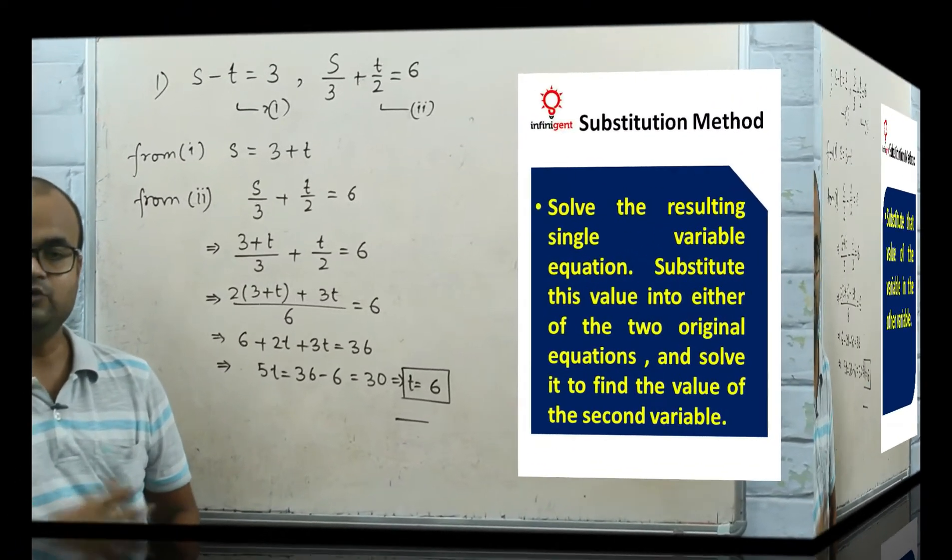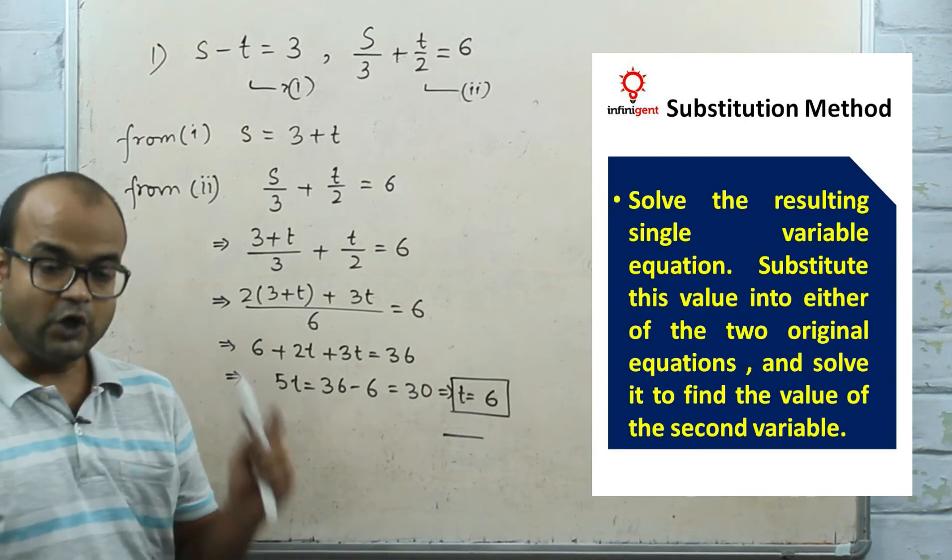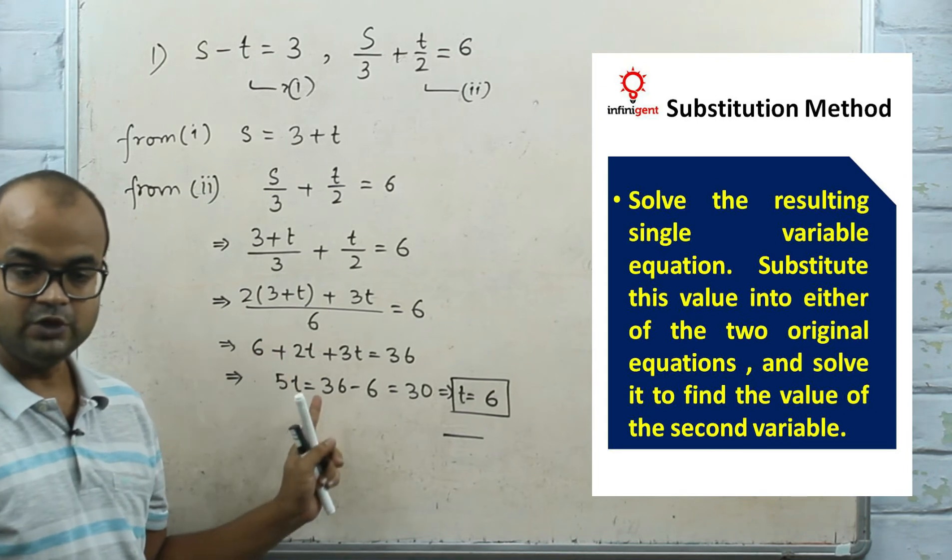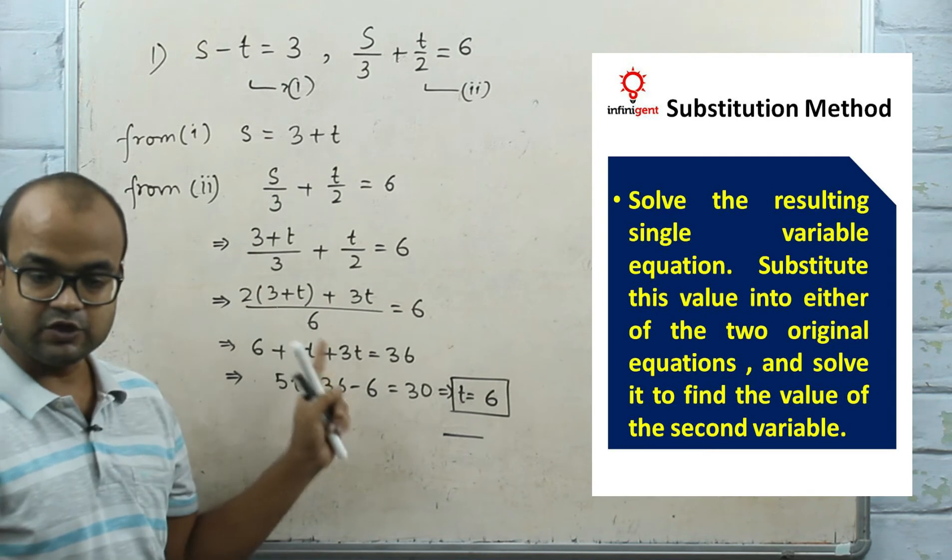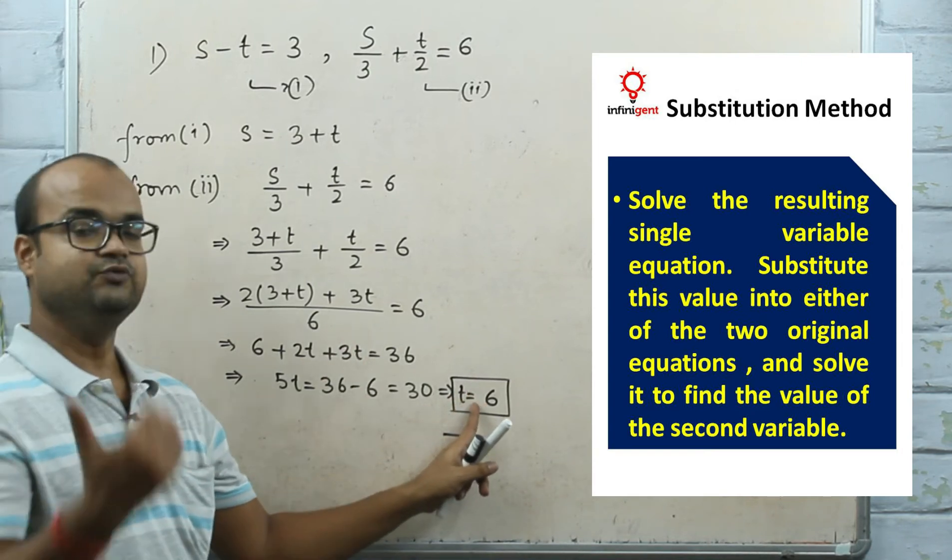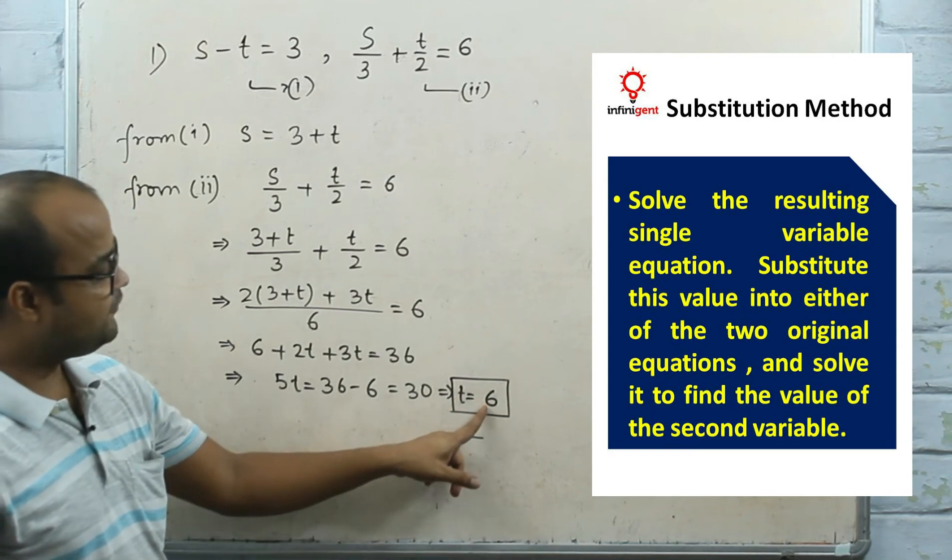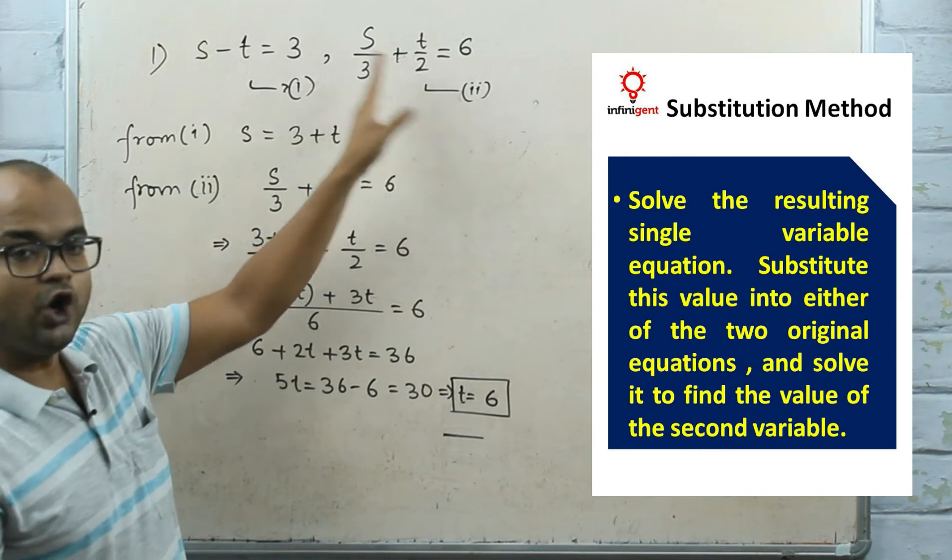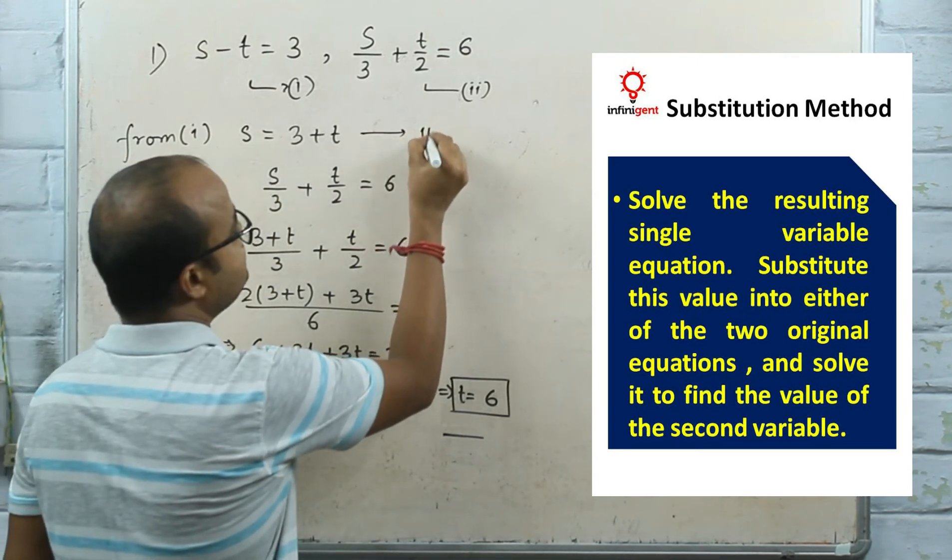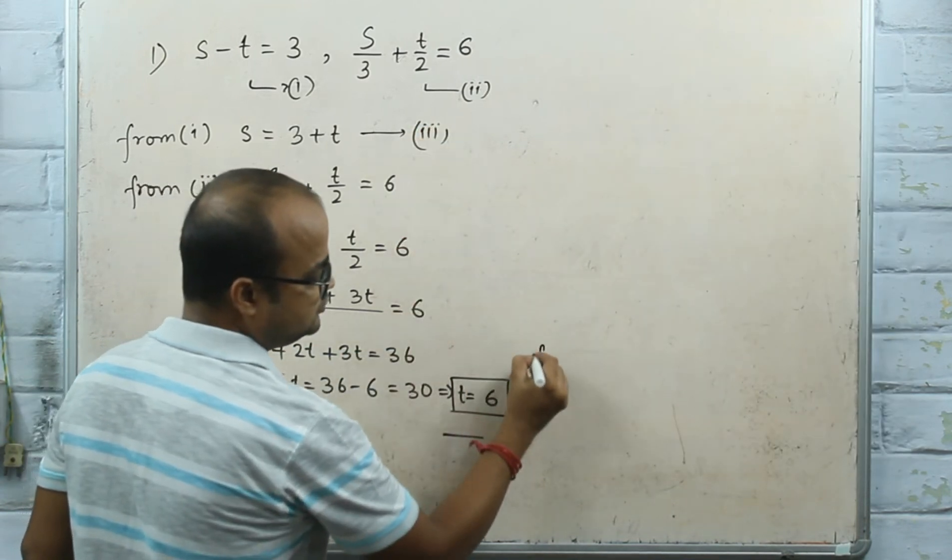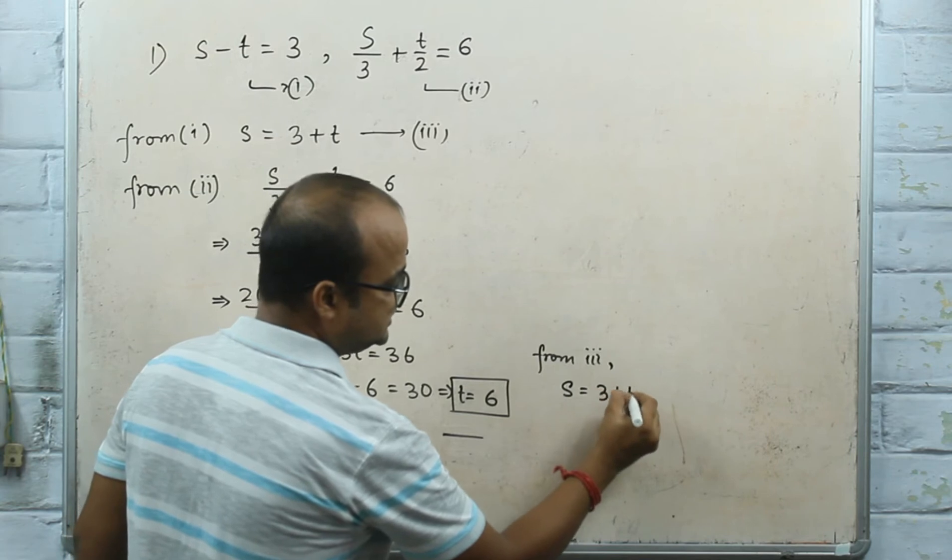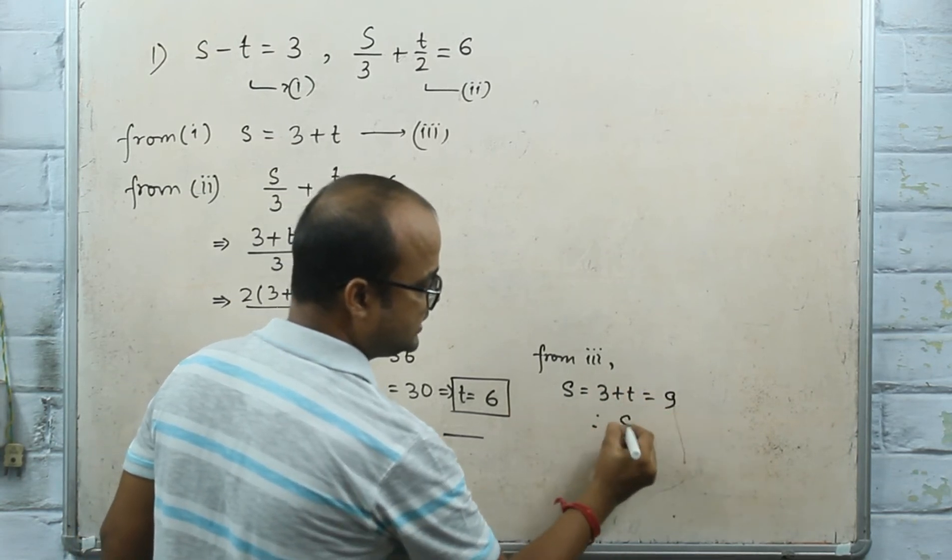Now solve the resultant single variable equation. Substitute this value into either of the two original equations to find the value of the second variable. Once you got the value of T, substitute this value in any one of the equations. From equation 3: S = 3 + T = 3 + 6 = 9. Therefore, S equals 9.